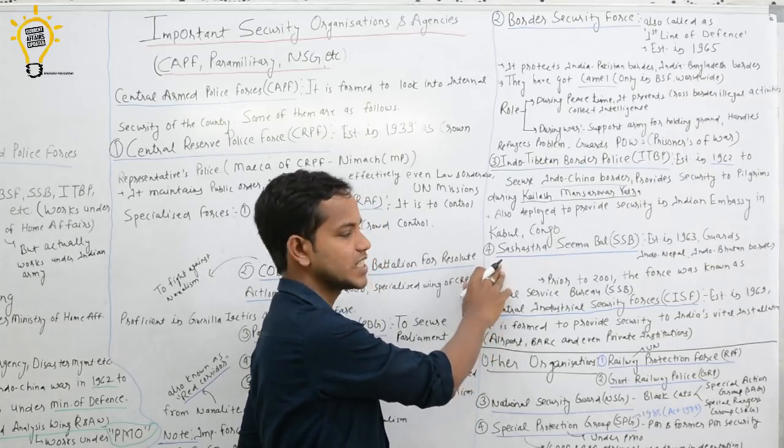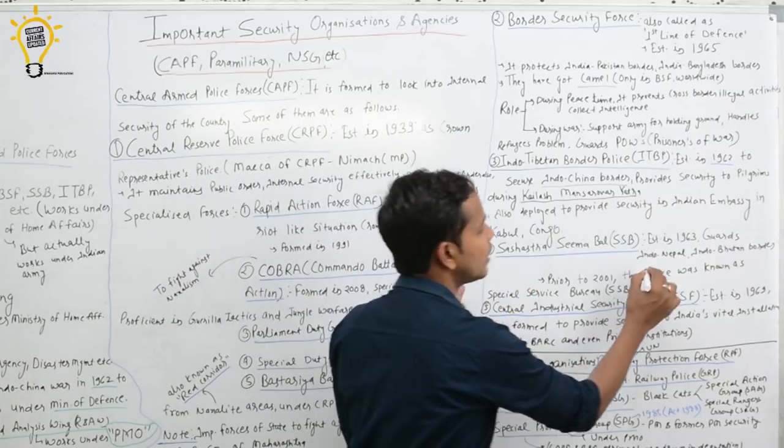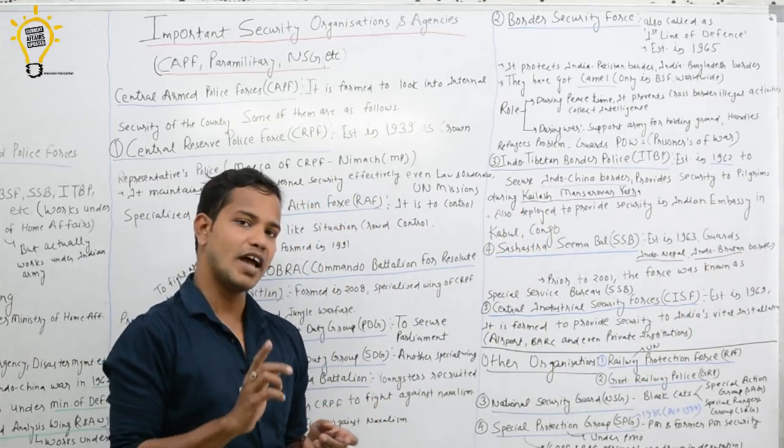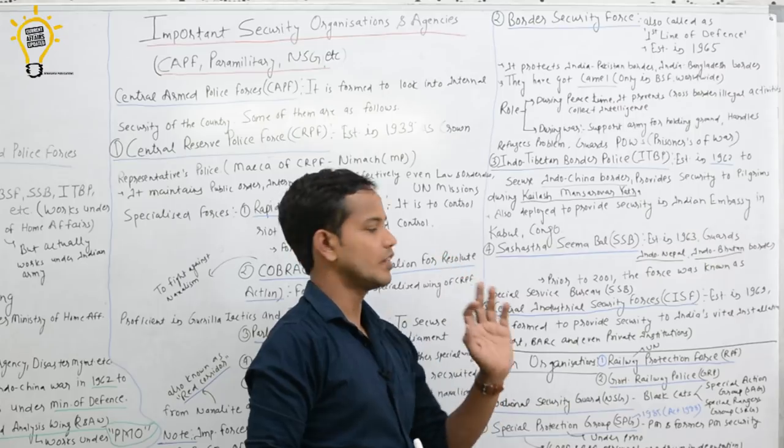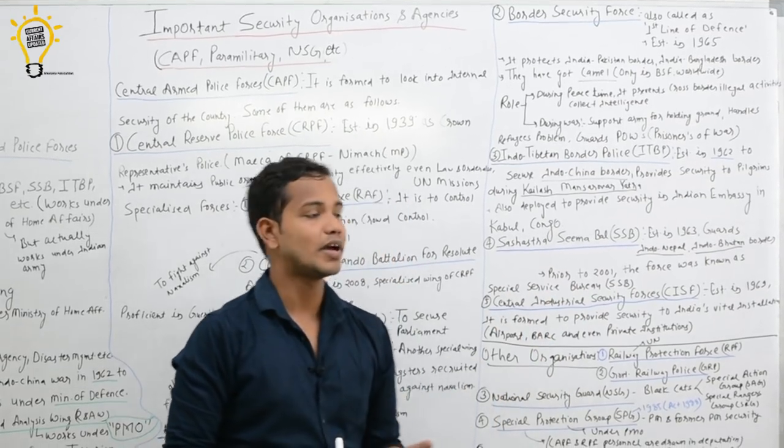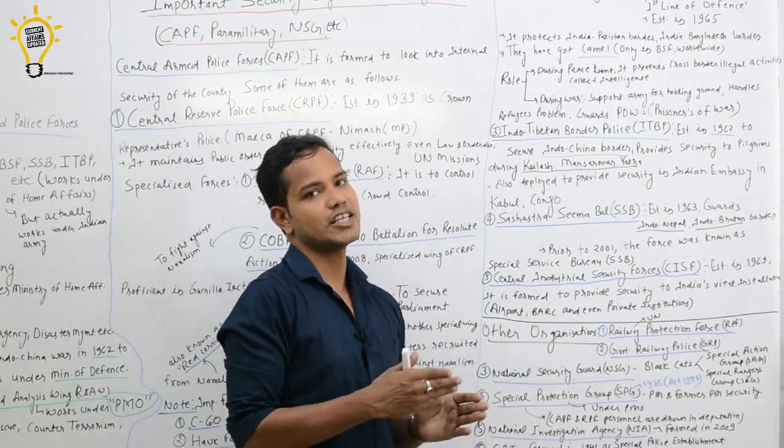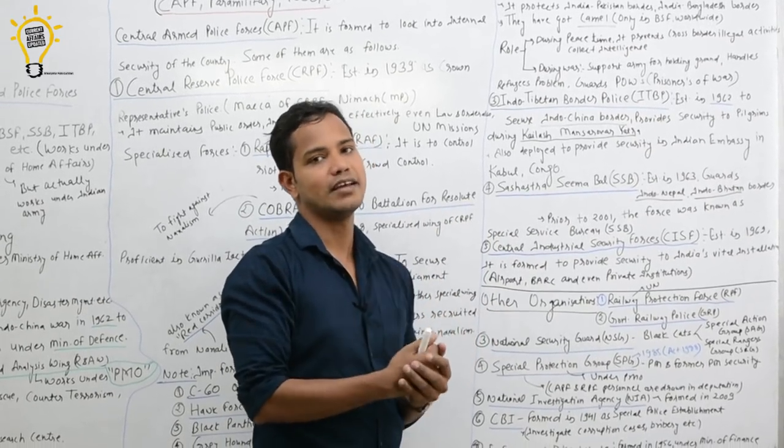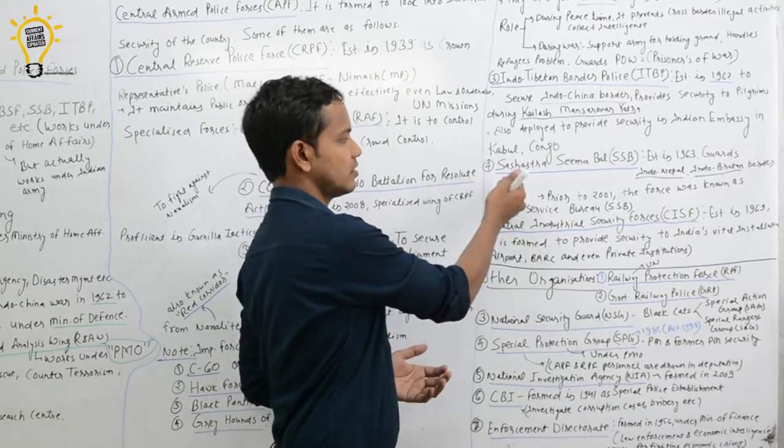Next important force is Sashastra Seema Bal. Created around 1963, which guards Indo-Nepal border and Indo-Bhutan border. Remember this one thing: prior to 2001, before 2001, this force was called Special Service Bureau. Sashastra Seema Bal, before 2001, was called Special Service Bureau. When this was created, its main work was to work together with Research and Analysis Wing, RAW, in border areas near Chinese border, in Assam, Bangladesh, to inculcate belonging towards Indians among the people. Apart from this, it helped as an armed wing of Research and Analysis Wing. Later it became Sashastra Seema Bal.